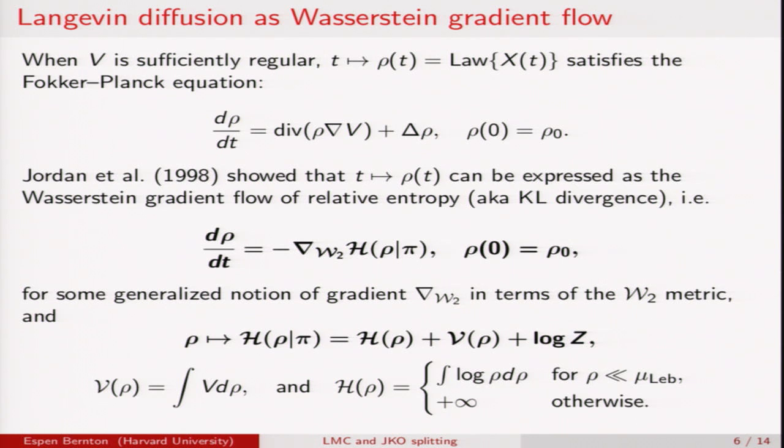Let's take a closer look at Langevin diffusion. It's known that it satisfies, rho satisfies the Fokker-Planck equation. Jordan et al showed that the right-hand side of this equation can in some sense be interpreted as the gradient or negative gradient of relative entropy. So that's to say rho is a gradient flow of relative entropy in the space of probability distributions metrised by the Wasserstein distance for some generalized notion of gradients.